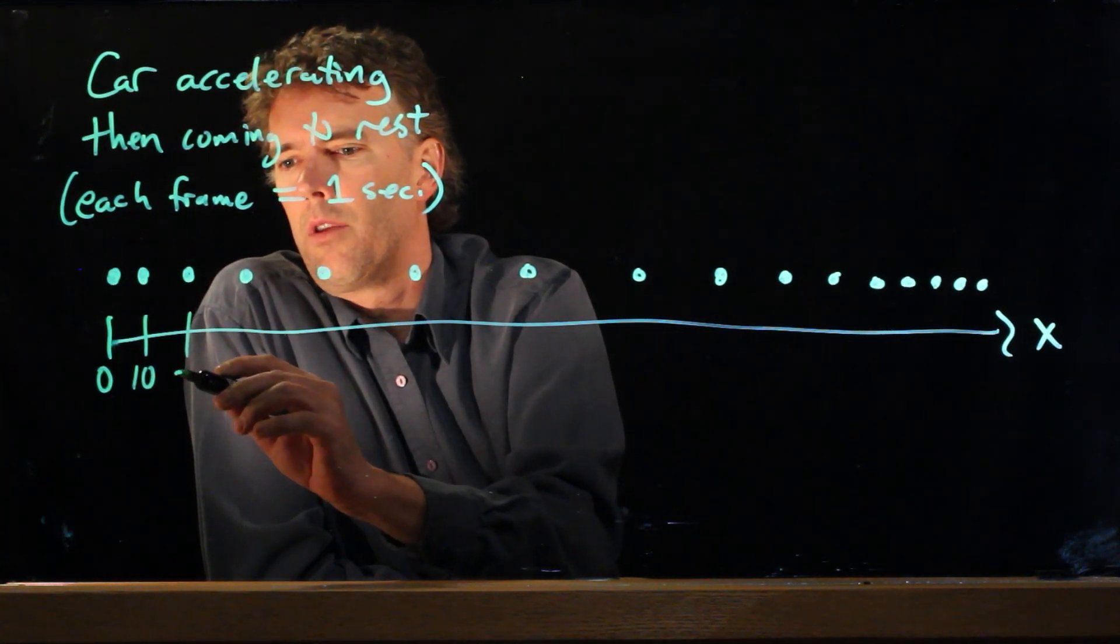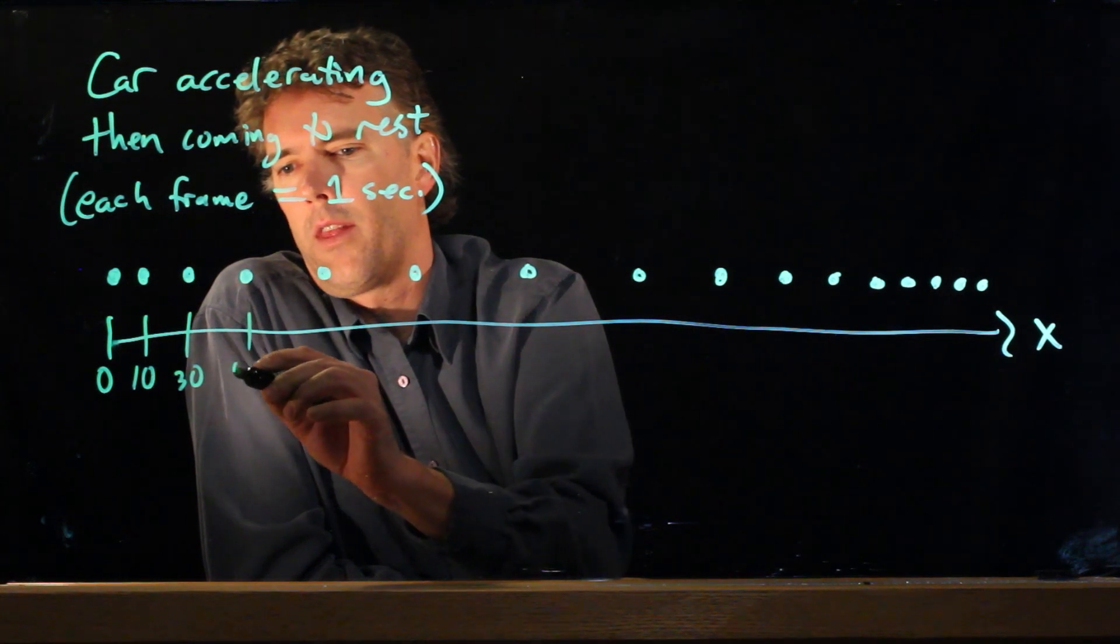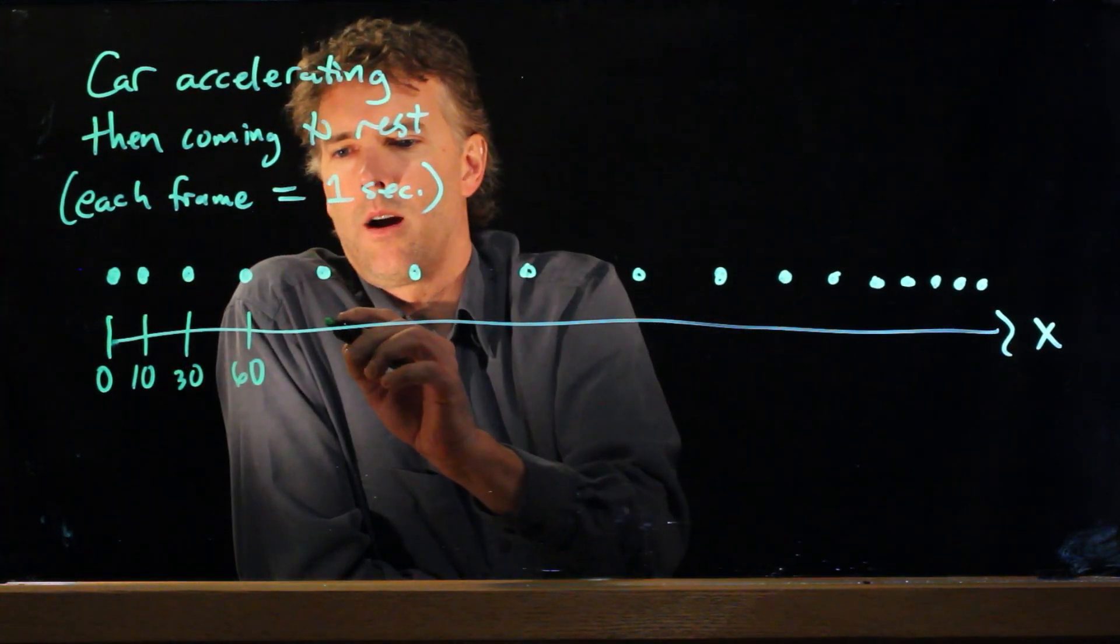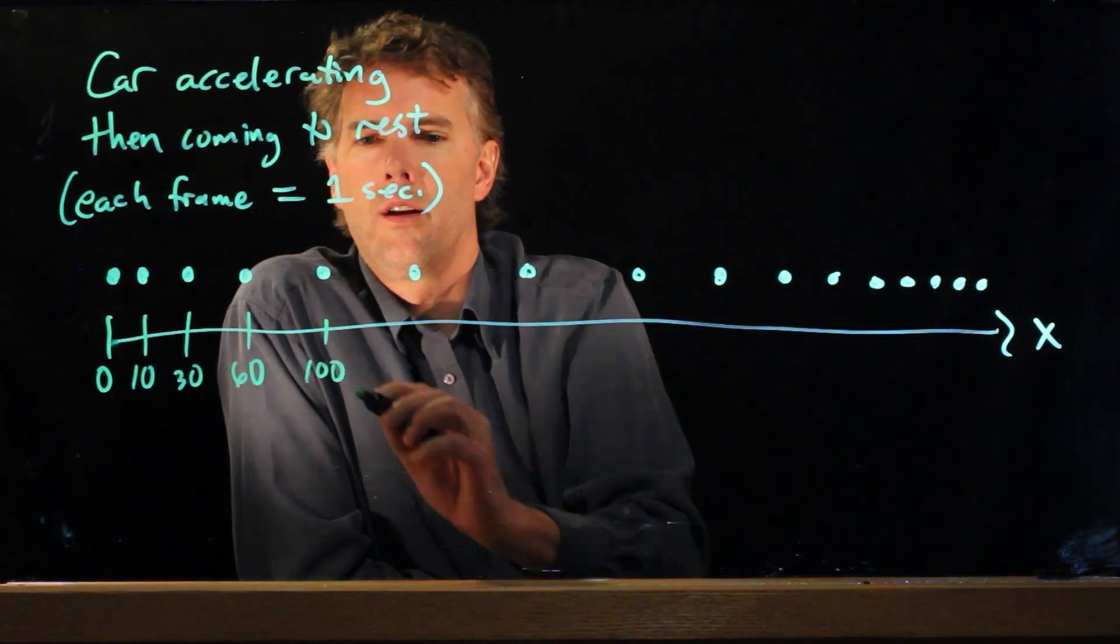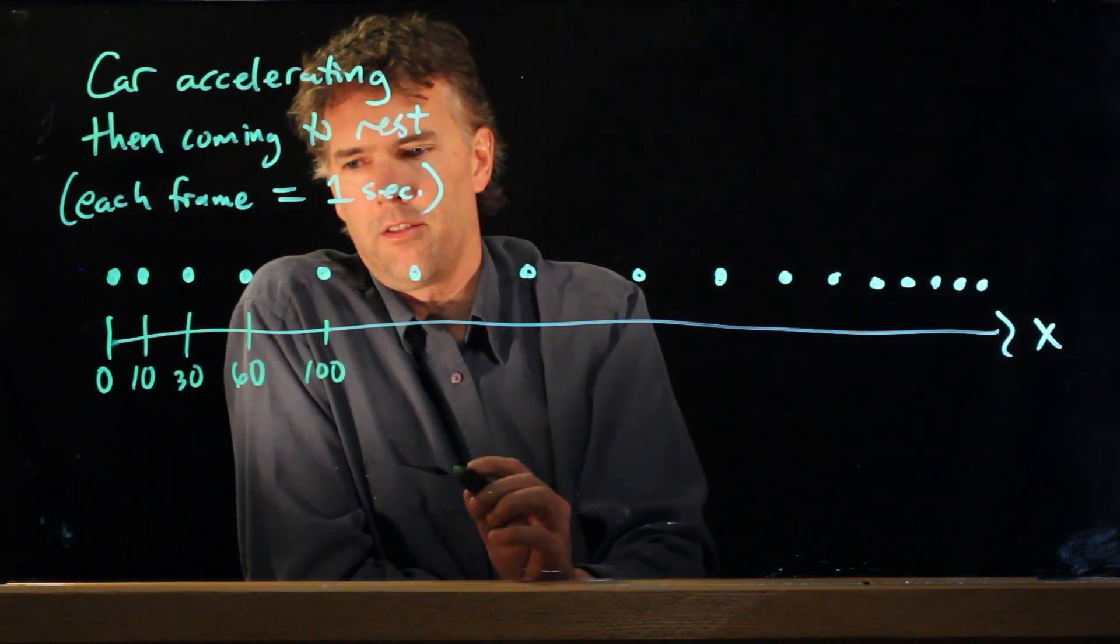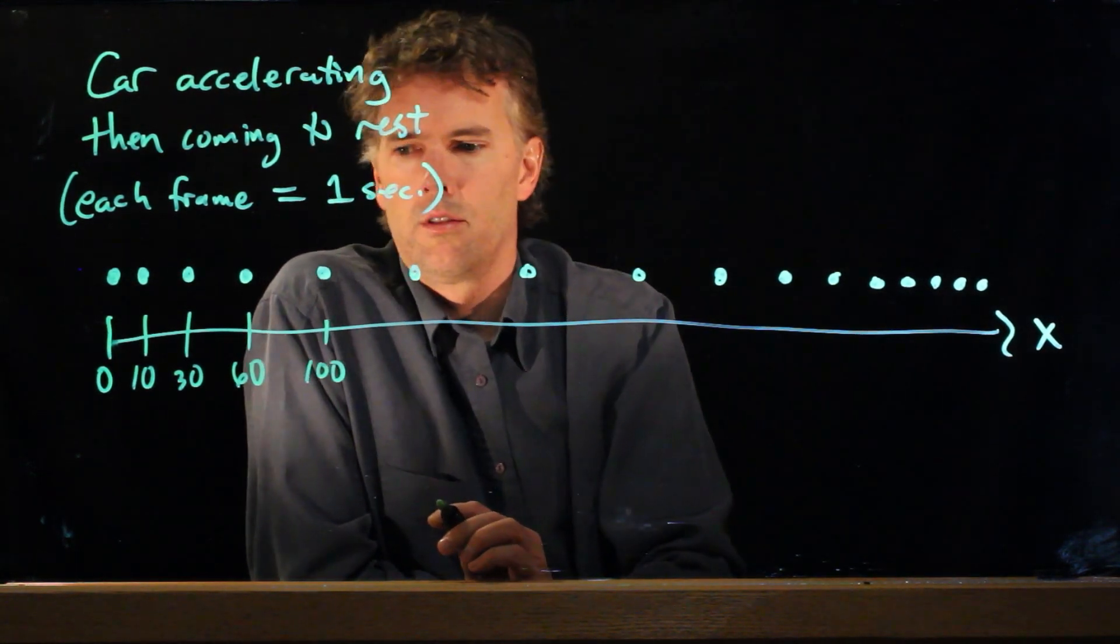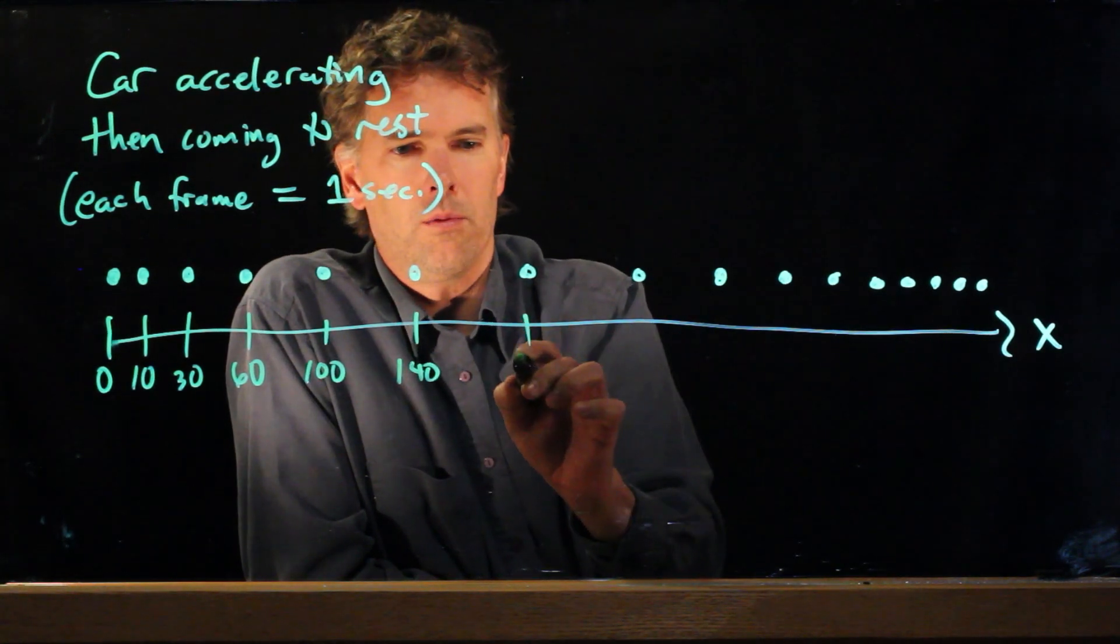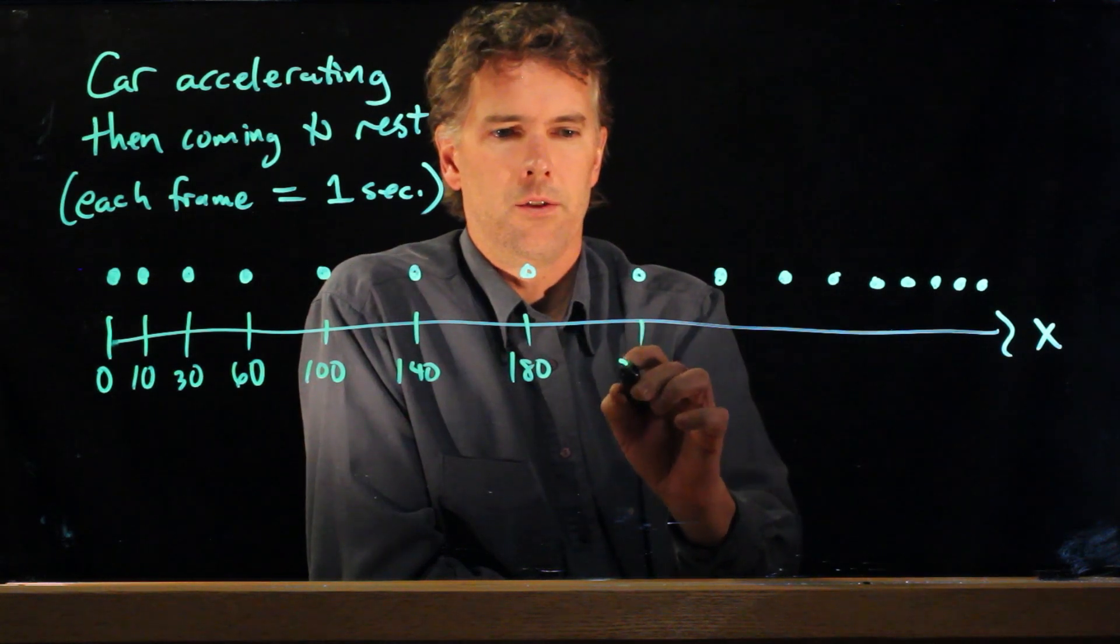And now we have jumped up to 30 meters and now this is even a little bit further than that, 60. And now we go a little bit further, maybe 100. And now we are moving at roughly the same clip, so the difference here, 60 to 100 is 40. So this would be 140, this would be 180, this would be 220.